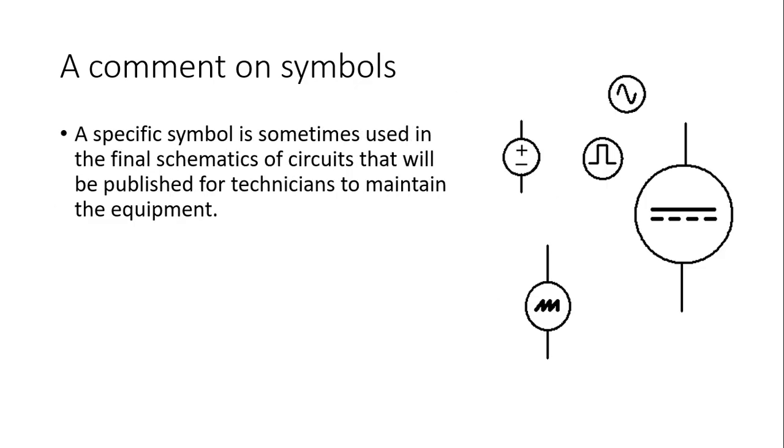Sometimes, when we are designing maintenance schematics, then we substitute the universal symbol for very specific symbols to tell the technician that will repair the equipment what he should expect at one point in the circuit: a DC source, that symbol is only for DC, it's exclusively DC, or a sinusoidal function of time only, or a square wave, or a sawtooth wave.